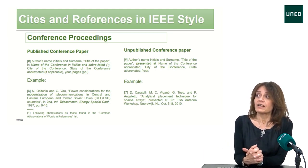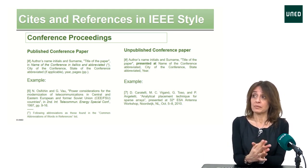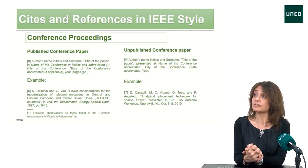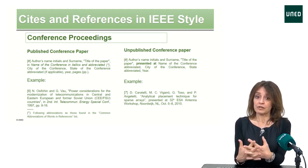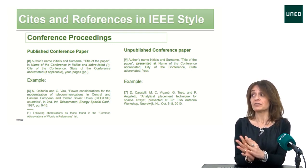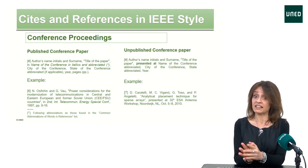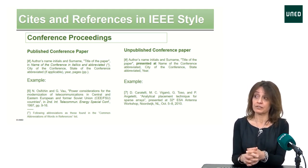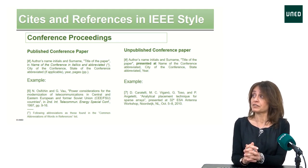Conference proceedings — there are two cases: the conference might be published or unpublished. If it is unpublished, we include the author's initials and surname as always, the title of the paper in quotation marks, the name of the conference in italics and abbreviated, the city of the conference, the state abbreviated as well, the year, and the pages.